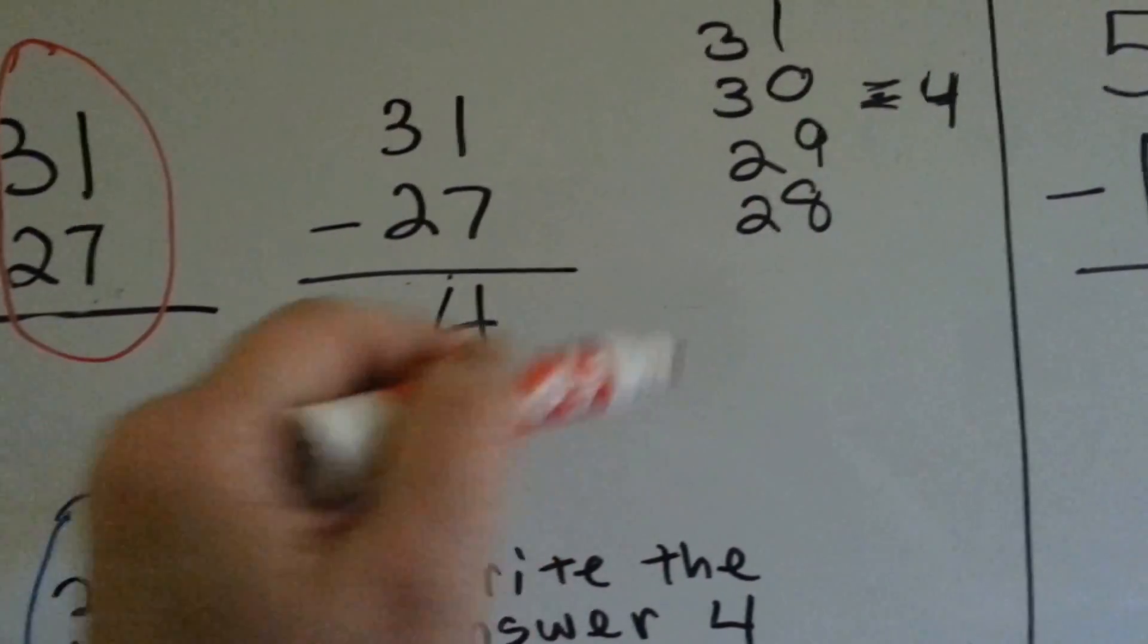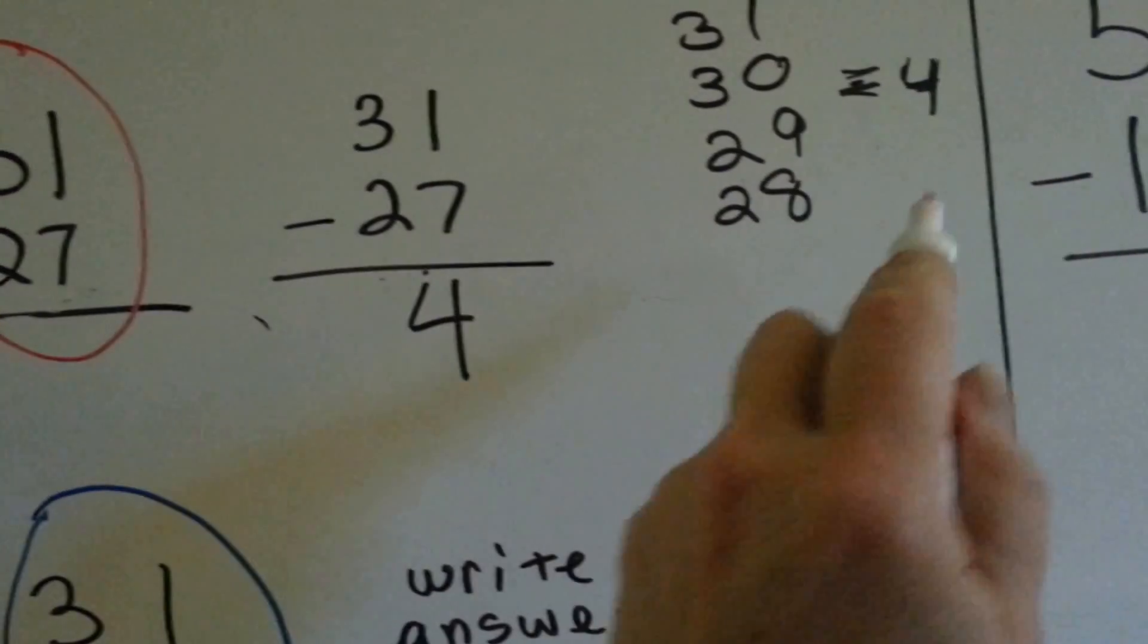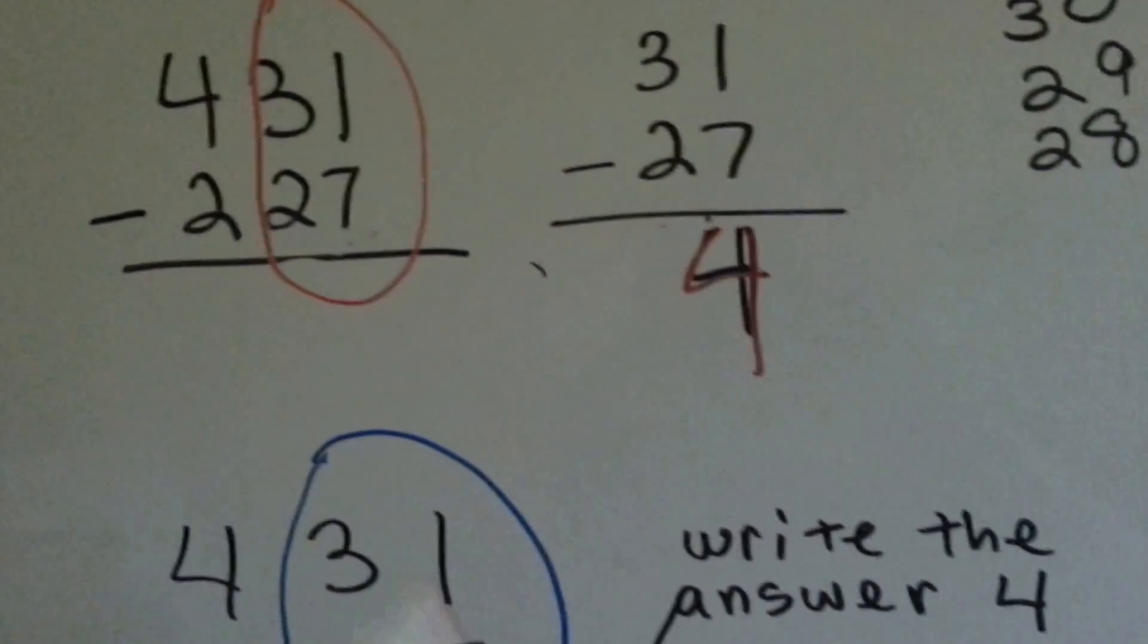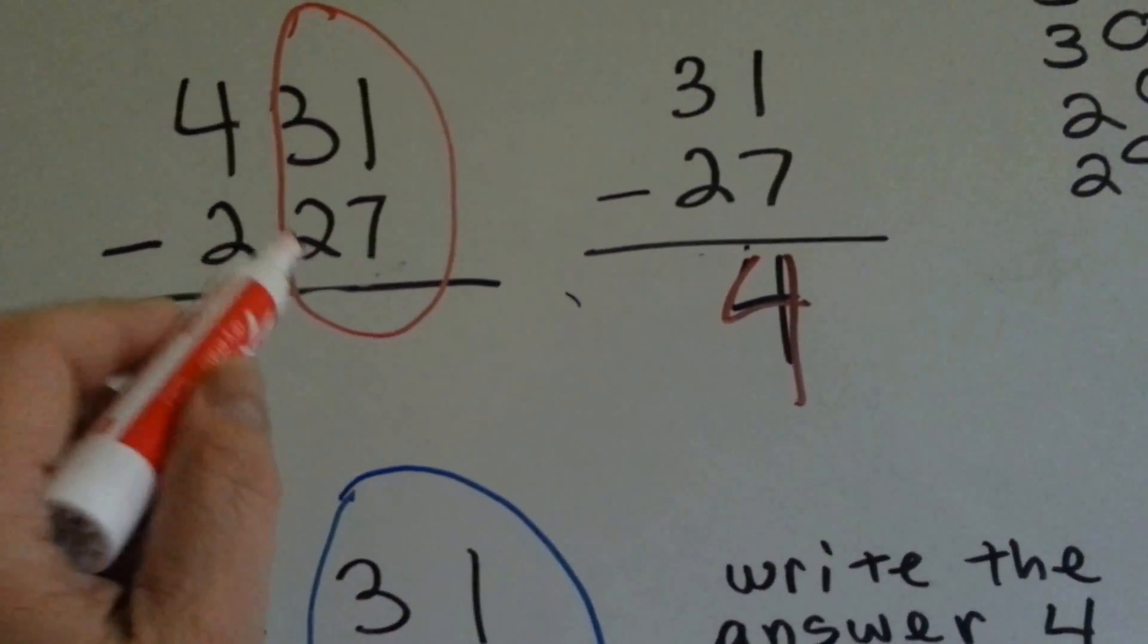27, 28, 29, 30, 31, we get 4. The difference is 4. So we know 31 minus 27 is 4.